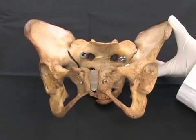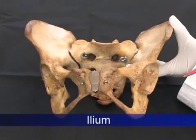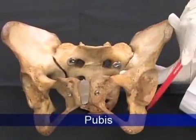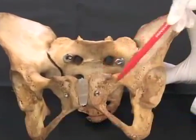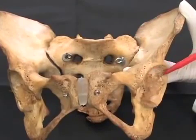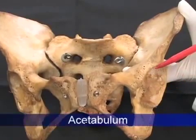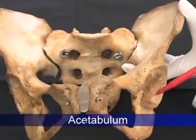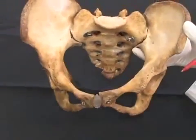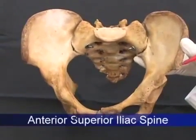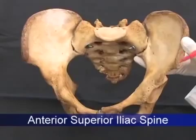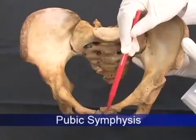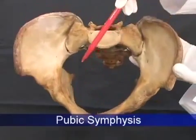The pelvis is made of three bones: the ilium, ischium, and pubis. These three bones join to form the socket for the hip joint, known as the acetabulum. Remember that in the anatomical position, the anterior superior iliac spine, or ASIS, and the pubic symphysis are in the same vertical plane.